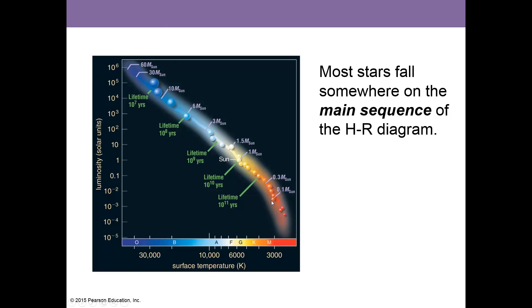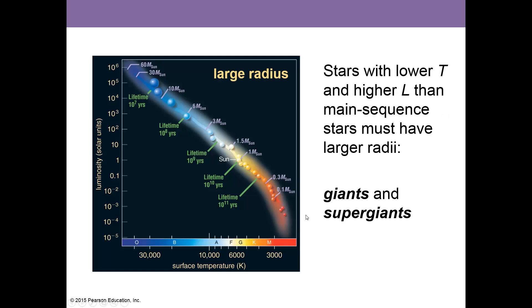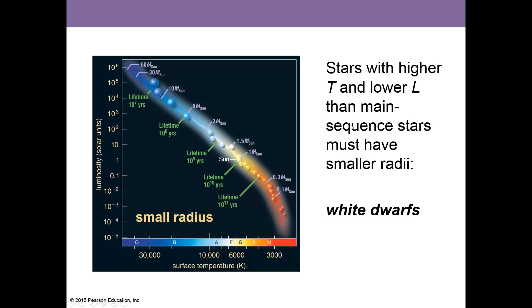Most stars fall somewhere on the main sequence of the HR Diagram—again, these are the normal stars. The stars I researched were way down here, the red dwarf stars, eclipsing binary stars. Stars with a lower temperature and a higher luminosity must have bigger radii—the giants and supergiants. Stars with higher temperatures but lower luminosity than the main sequence stars must be smaller, the white dwarfs.